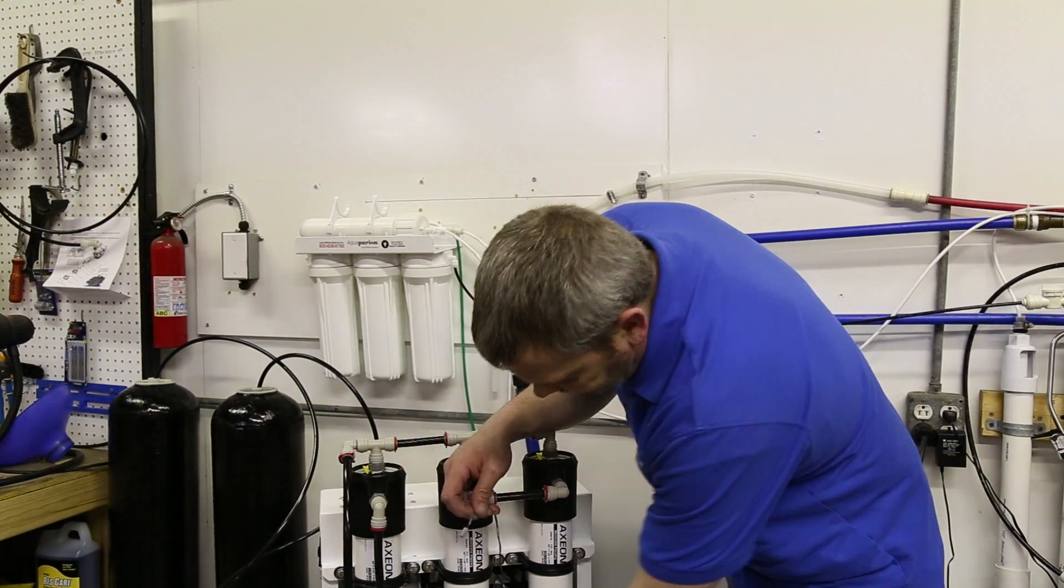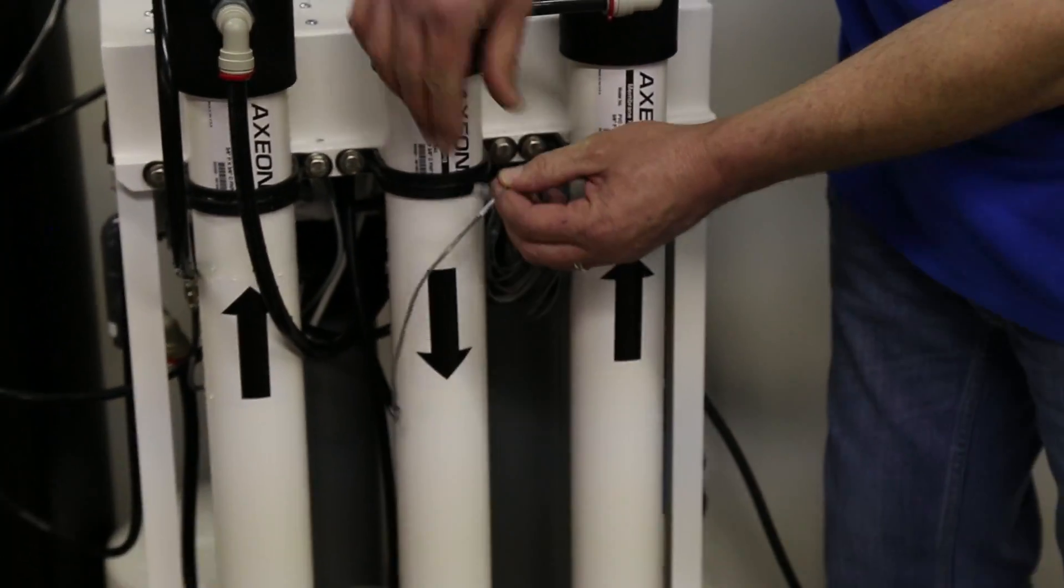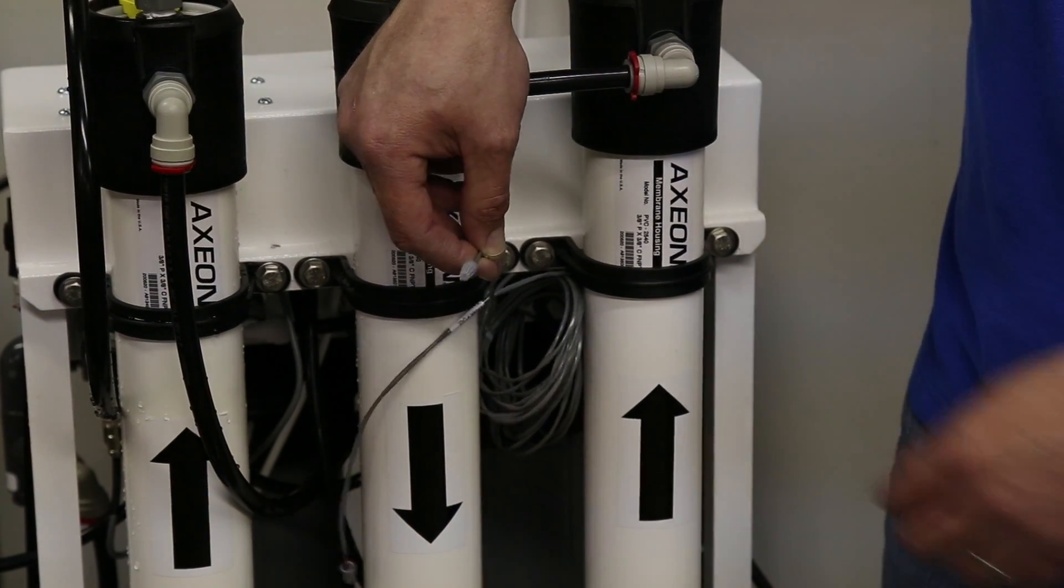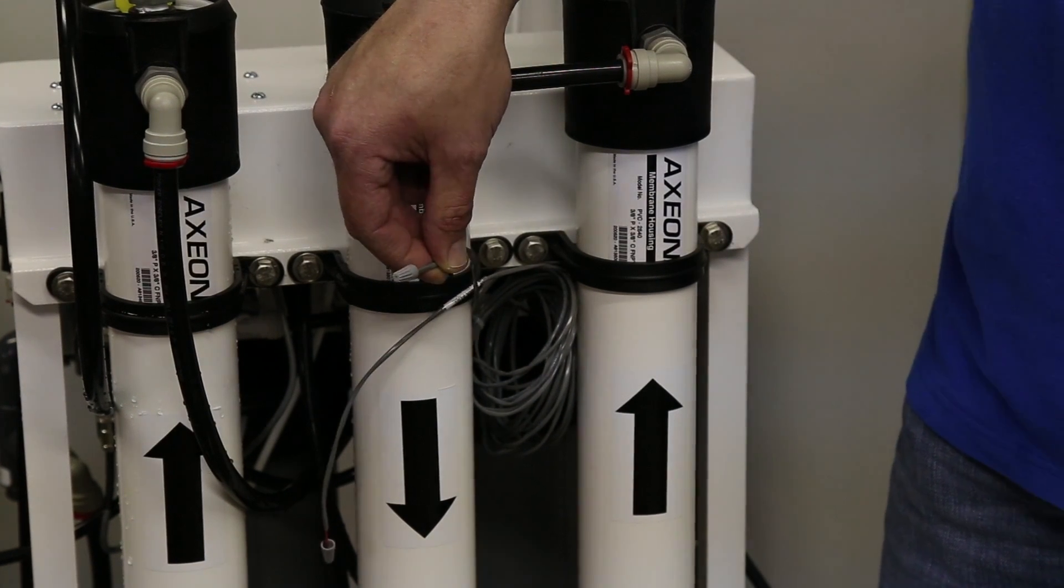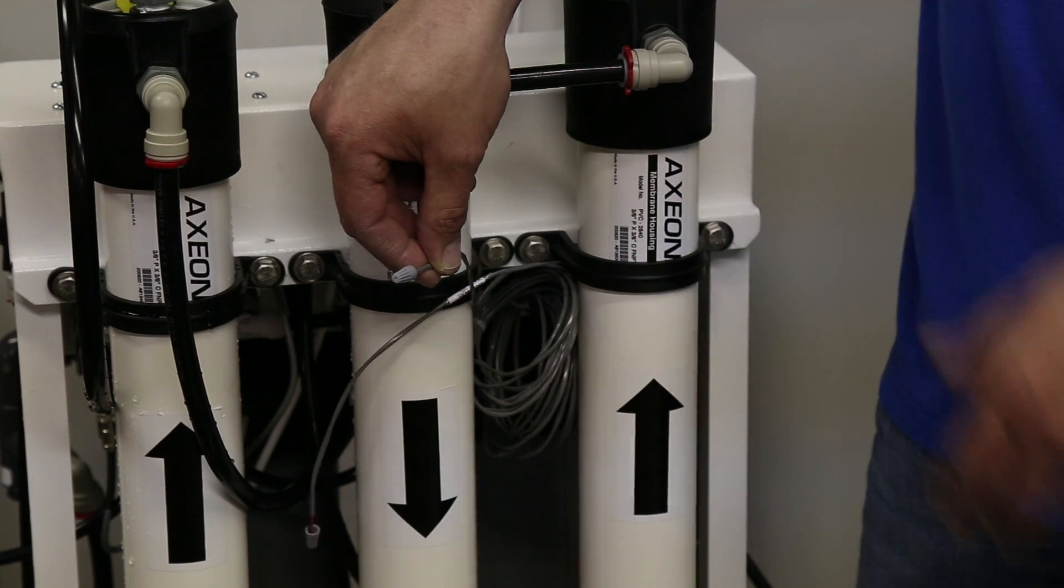Now the other one we have here is called pre-treatment lockout and it works the same way. It's still a switch closure, no voltage, and it still has to be closed for the RO to run. Now what this is for is you can actually run a circuit with an ancillary switch on some of your pre-treatment items.